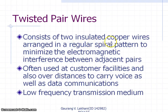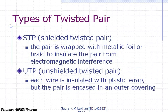Twisted pair wires consist of two insulated copper wires arranged in a regular spiral pattern to minimize electromagnetic interference between adjacent pairs. They are often used in customer facilities and can carry voice as well as data communications. Twisted pair wires can be broadly classified as shielded twisted pair (STP) and unshielded twisted pair (UTP). In STP, the pair is wrapped with metallic foil or braid to insulate it from electromagnetic interference, while in UTP, each wire is insulated with plastic wrap and the pair is encased in an outer covering.